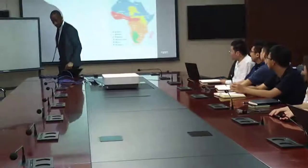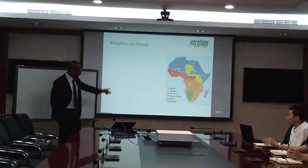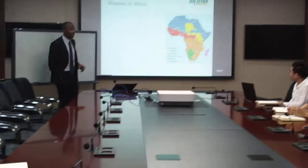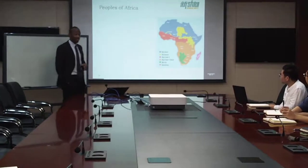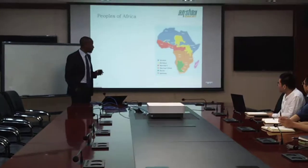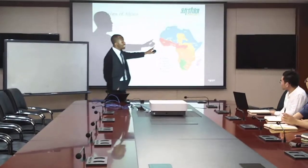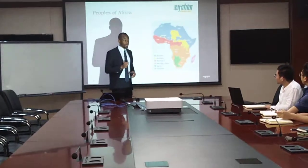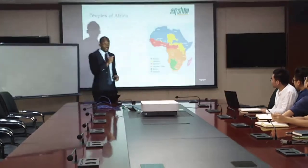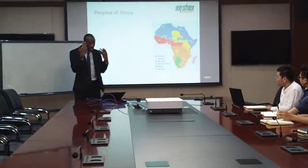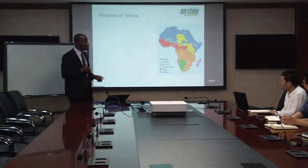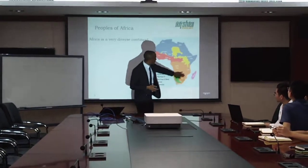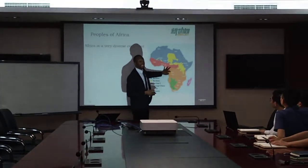This is a map representing the different peoples of Africa. We've said that there are thousands of them, but those thousands can be divided into three major groups. This is important to understand how it shapes their minds.